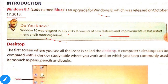The first screen where you see all the icons is called the desktop. A computer's desktop can be compared with a desk or study table where you work, and on which you keep commonly used items such as pens, pencils, and books. So the desktop can be compared to your table.